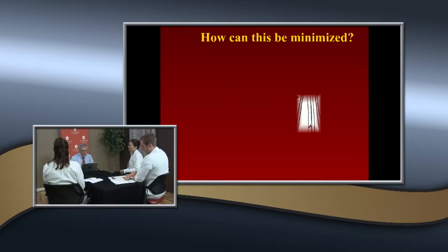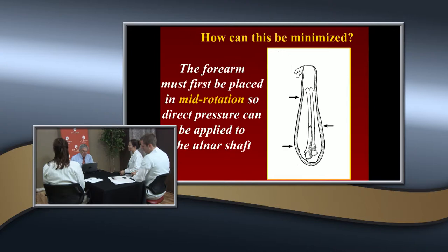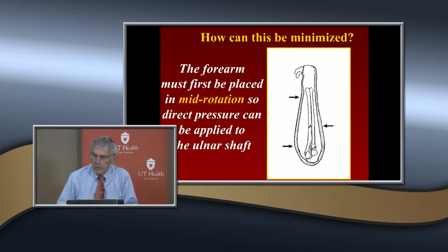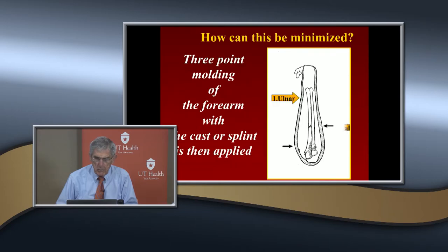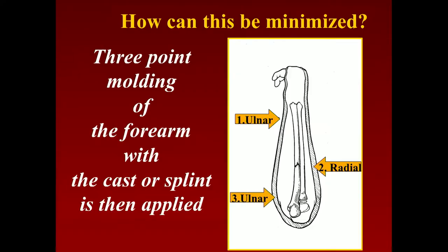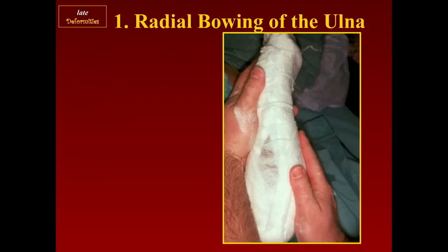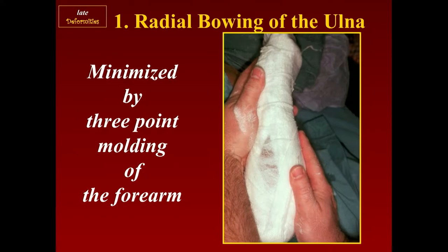There was a question whether you put them in supination, pronation, or mid-rotation. The reason you put them in mid-rotation is so that you take the radius out and can apply three-point molding on the ulna. You can only do this if you put it in neutral. You can use sugar tongs or a Munster type of cast and put your three-point molding on.